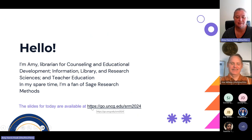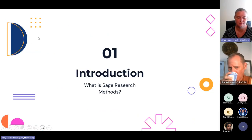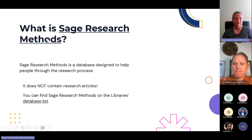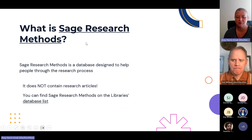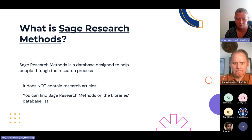This is a link to the slides; I will paste it in the chat at the end. So, what is SAGE Research Methods? It's a database about research. It doesn't contain articles on a topic or articles from journals in a specific field — it's not like that at all, which is why it kind of flies under the radar for a lot of people.